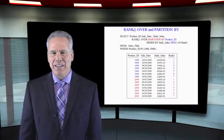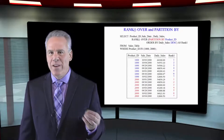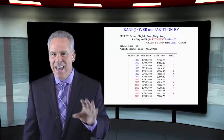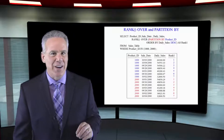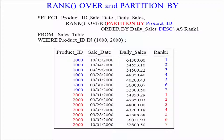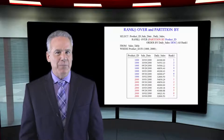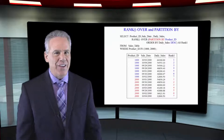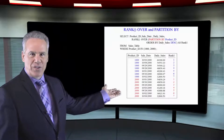Now we're back to using that wonderful partition statement. We're going to use RANK() OVER, partition by product ID, order by daily sales descending. It's going to reset with each product ID break, and you can see that in the results.